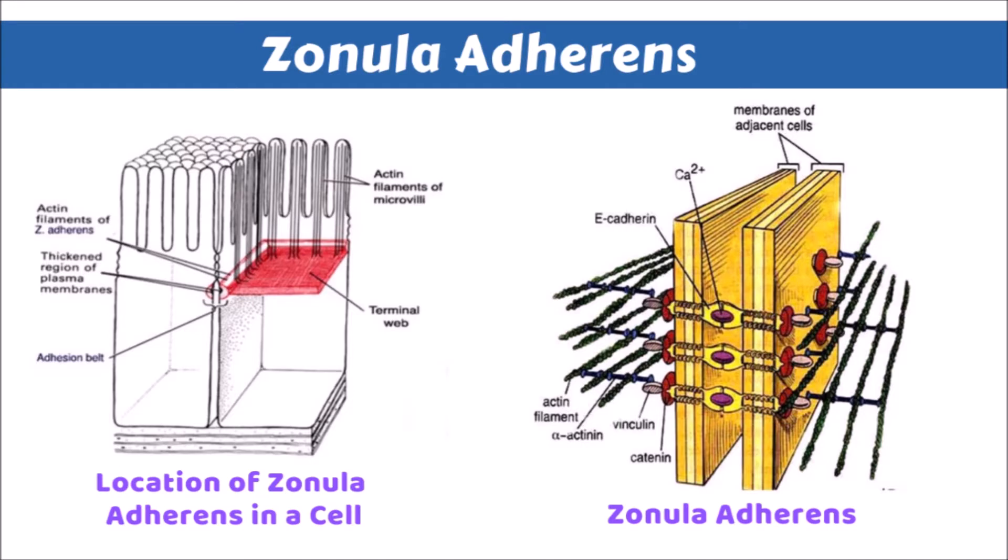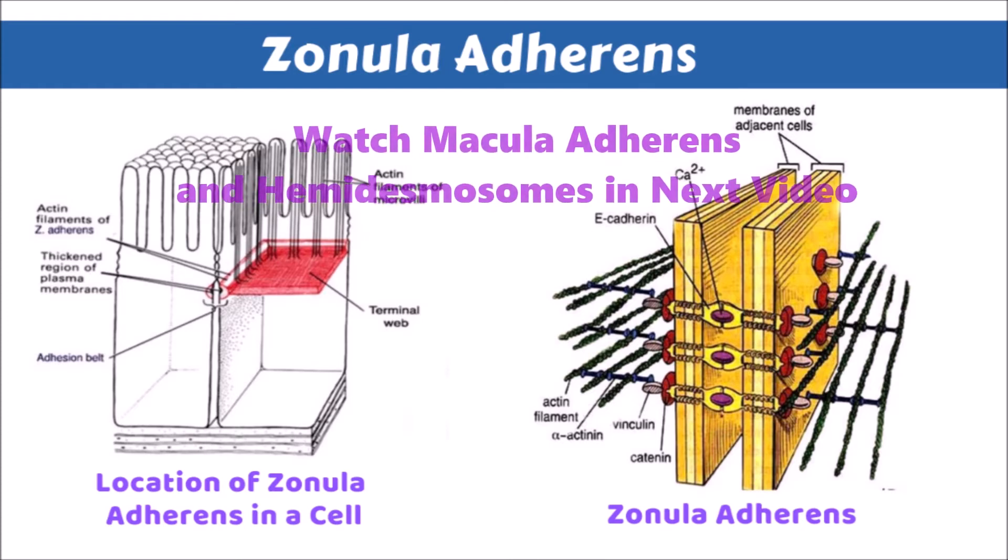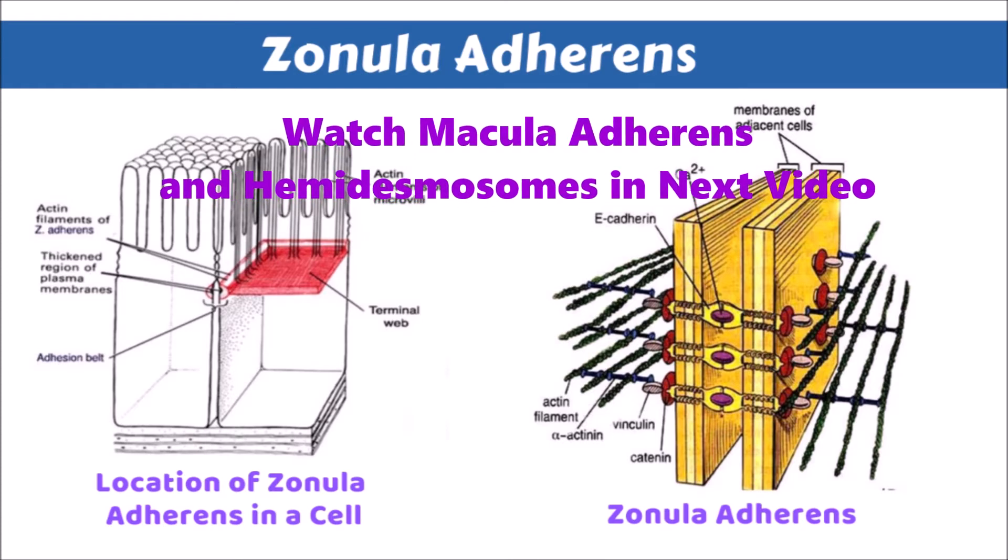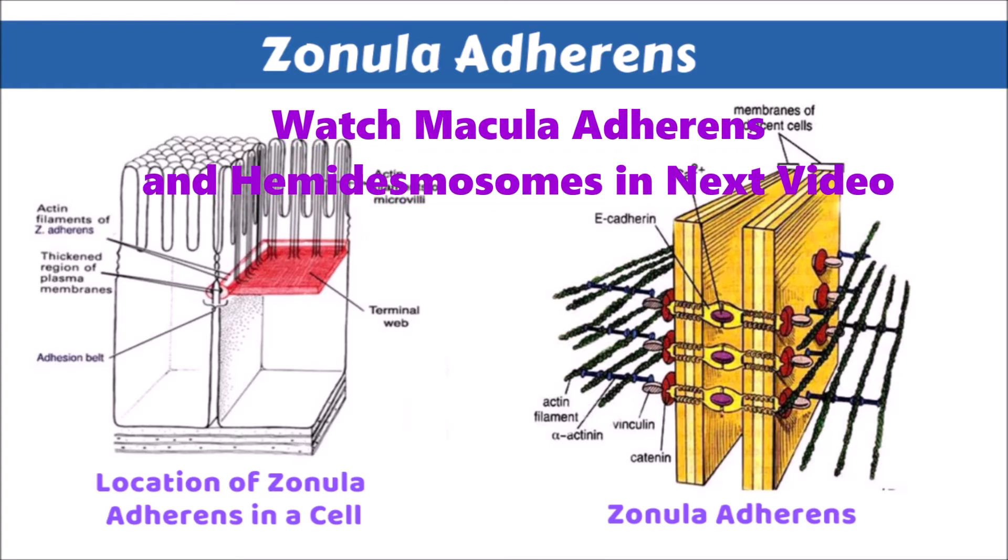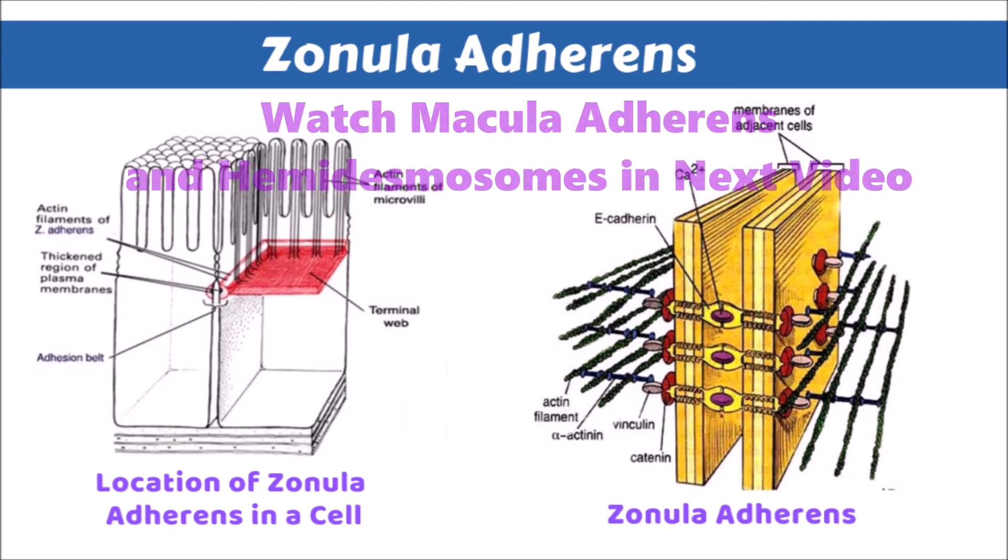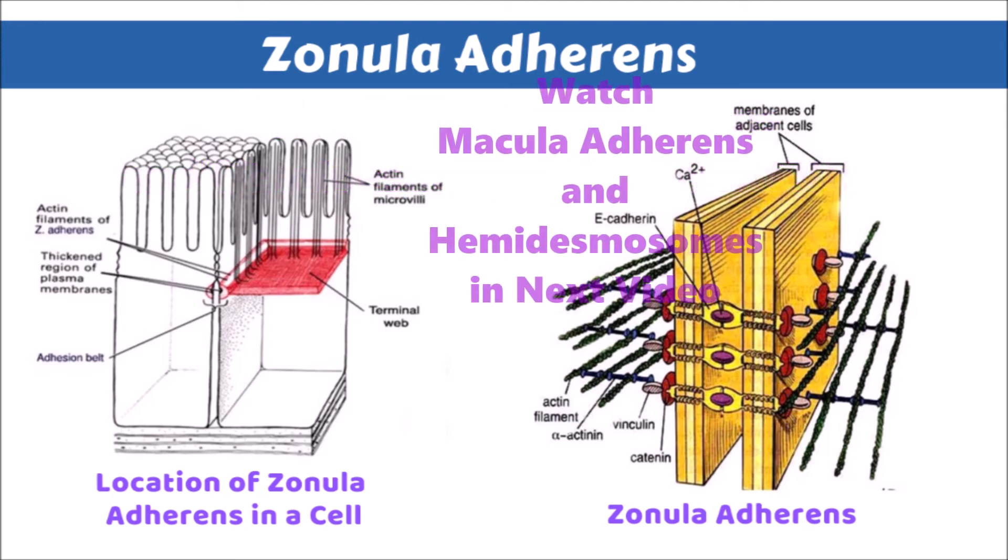These are basically the parts of zonula adherence. So, zonula adherence gives some intercellular proteins which are stabilized by calcium in the intercellular space. And within the cell, these are connected to the terminal web. So, terminal web, then intercellular proteins, then another terminal web of second cell. So, these keep the cells adhered in epithelium.